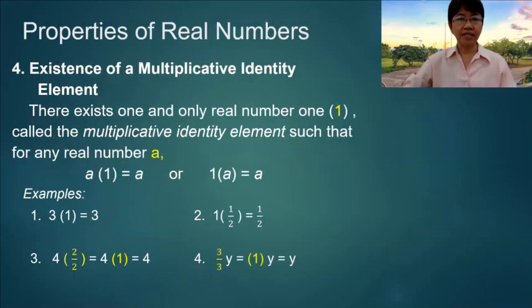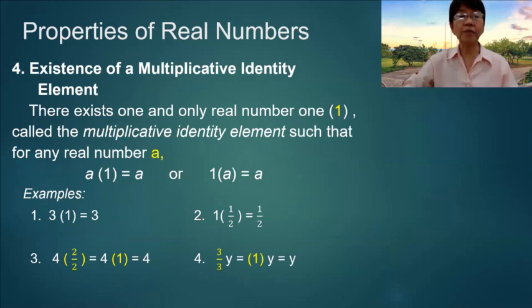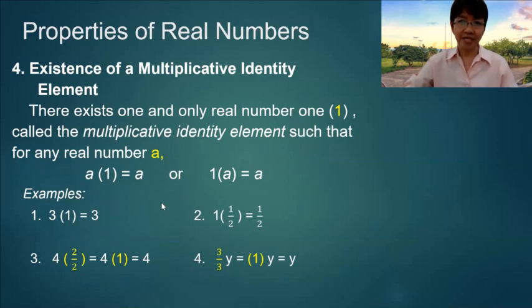Number four: Existence of the Multiplicative Identity Element. There exists one and only one real number, which is 1, called the multiplicative identity element, such that for any real number a: a times 1 is equal to a, or 1 times a is equal to a. Again, the examples are self-explanatory.